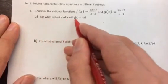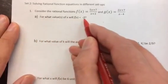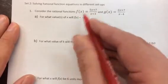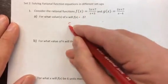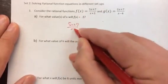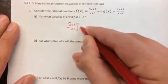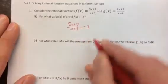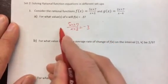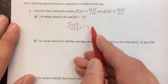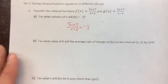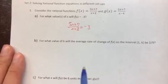For what values of x will f of x equal negative 3? Here's f of x — we want it to equal negative 3. This is just a straightforward rational equation: we multiply by x plus 3 on both sides, and it becomes a linear equation.